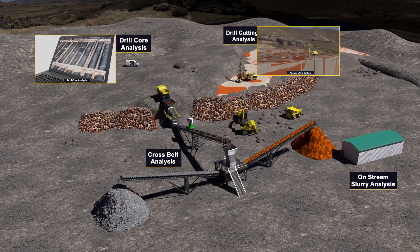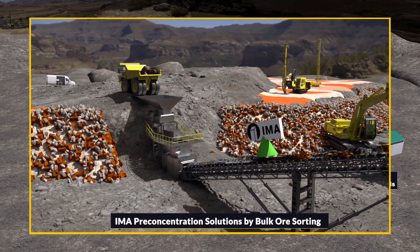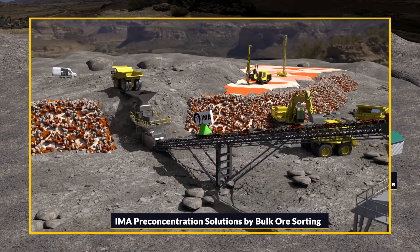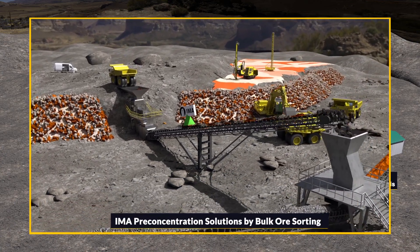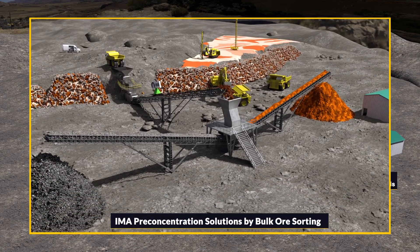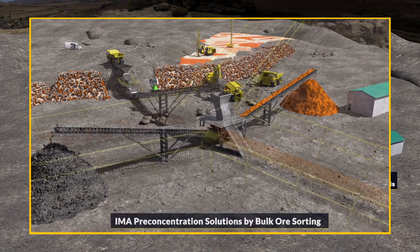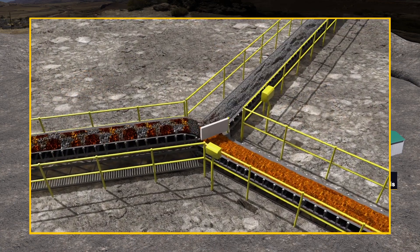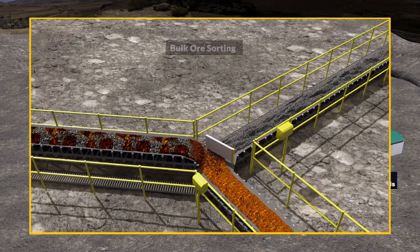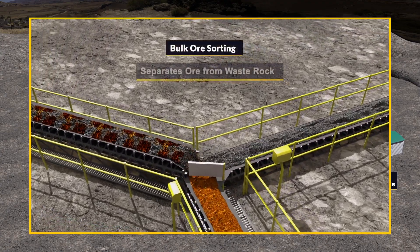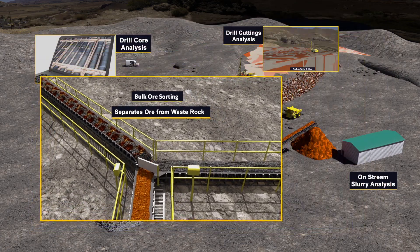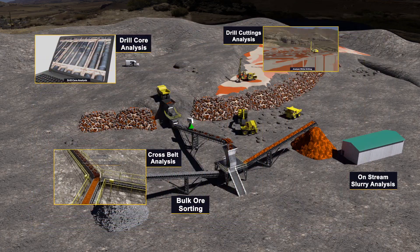EMA belt sensors analyze crushed ore on conveyor and deliver online information to the concentrator in advance to optimize processing. This information is also sent back to the mine for mining quality control. EMA belt analyzers are also used in ore pre-concentration in bulk ore sorting, separating ore and waste rock, and for separating recyclable clean rock from harmful acid-forming waste rock.